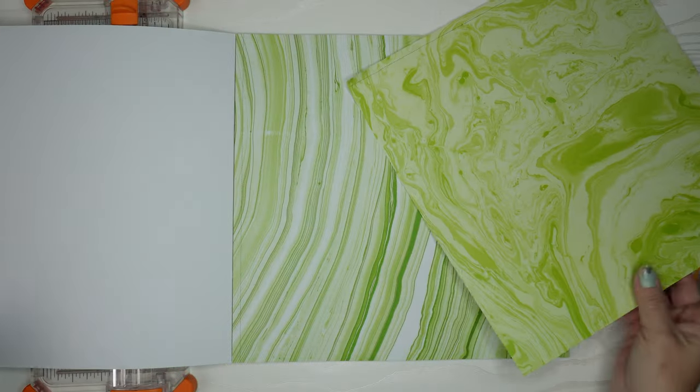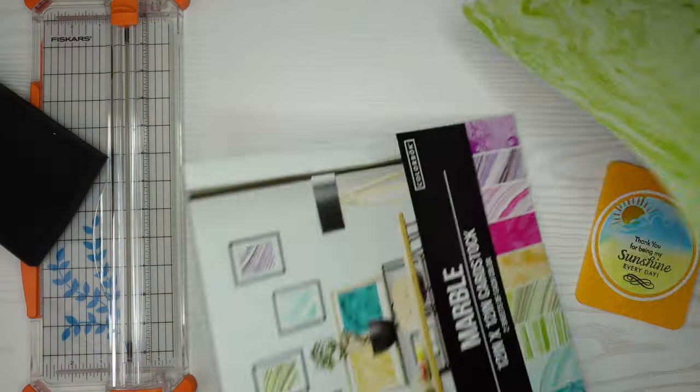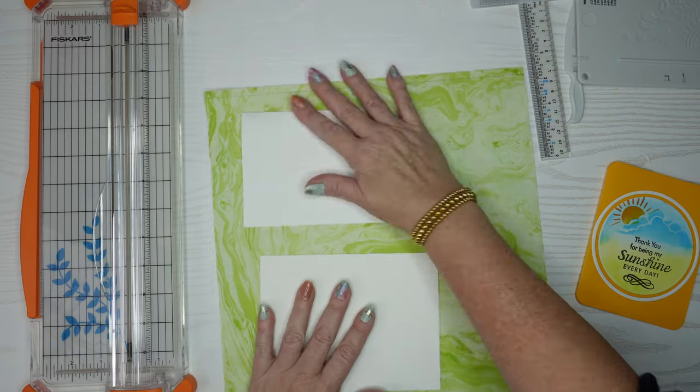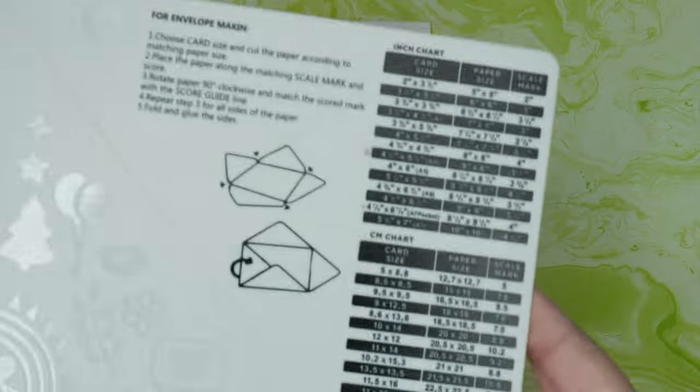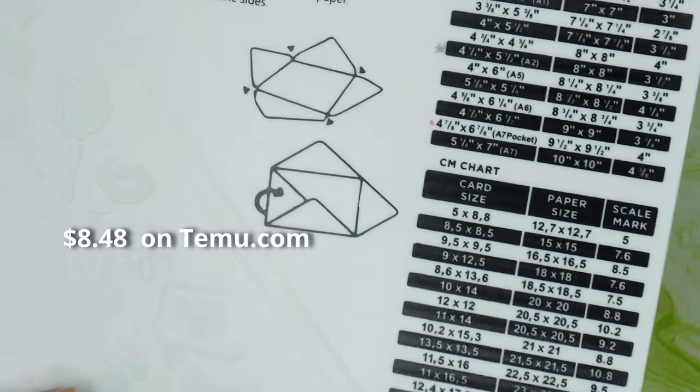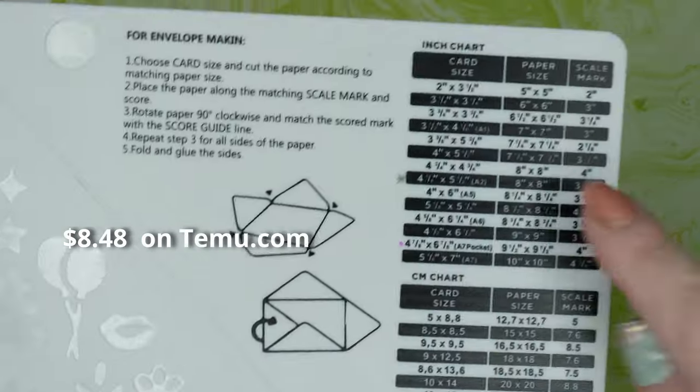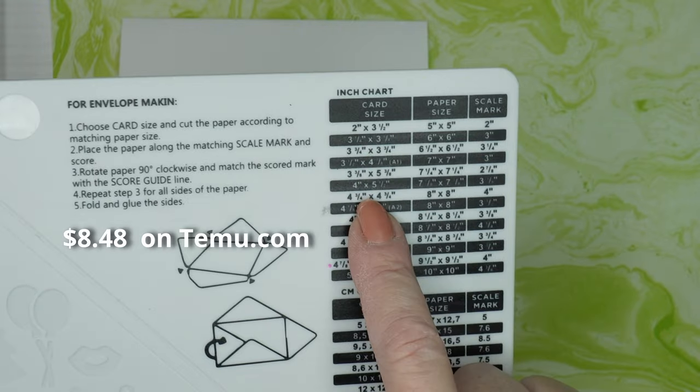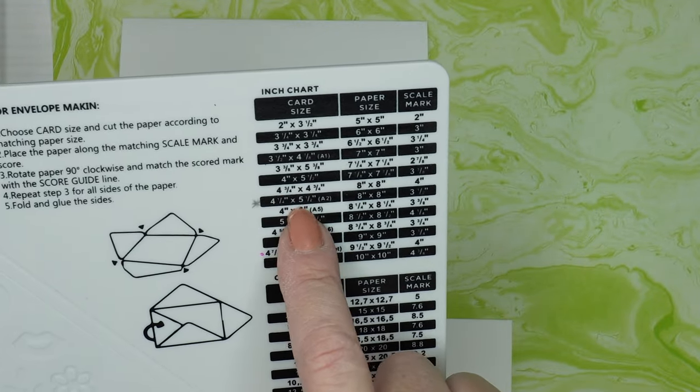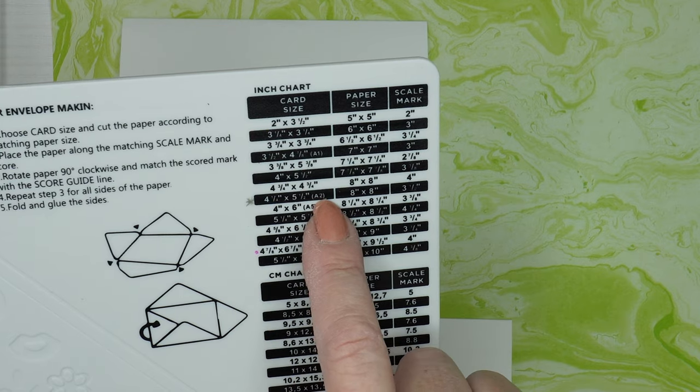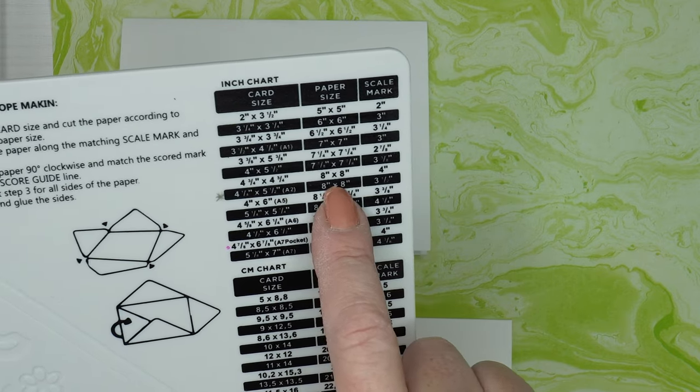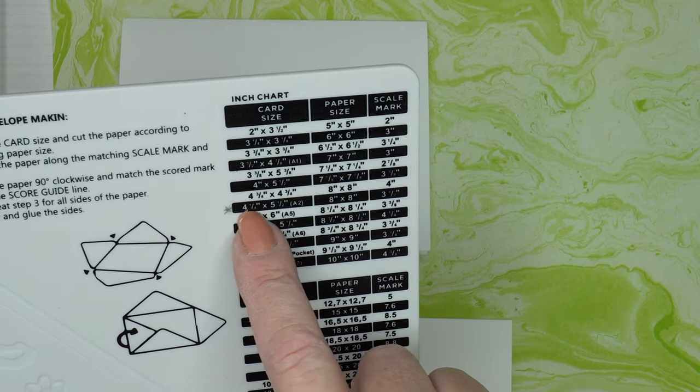I picked one out that I thought matched this card that I'm going to use. Here I've got my two card bases A2 and A7, and I'm going to first show you how to use this with a tool. This tool is very inexpensive. I got it off of Timu website. You can see here it's got all the different card sizes and then it tells you the paper size and the scale mark at the far left of the machine.